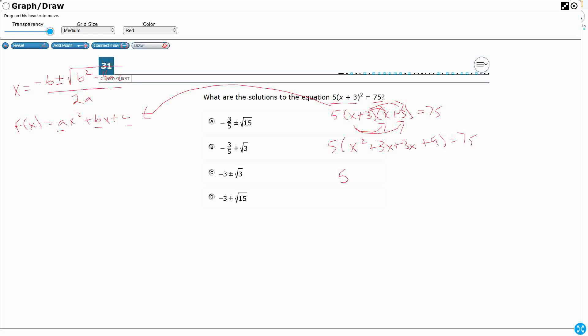So I've got, distribute this one out now, 5x squared plus that 6x times 5 is 30x. That's going to be 45 equals 75. Now I need to subtract 75 from both sides, and it's going to end up being 5x squared plus 30x minus 30 equals 0.